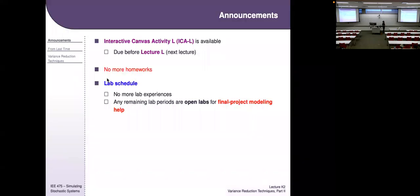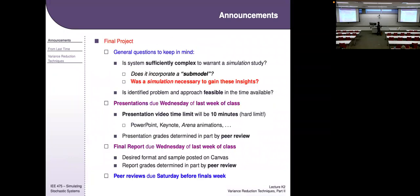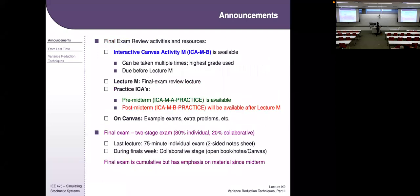iCal is available — that's due before Tuesday. There are no more homeworks. For the final project, due Wednesday of the last week of class, you need a 10-minute video presentation and a four-page final report in a very specific format posted online. Peer reviews are due Saturday of that week. For the final exam review activities, there's a final exam module — to unlock it you'll have to take the lockdown browser compliance test, just like the midterm.